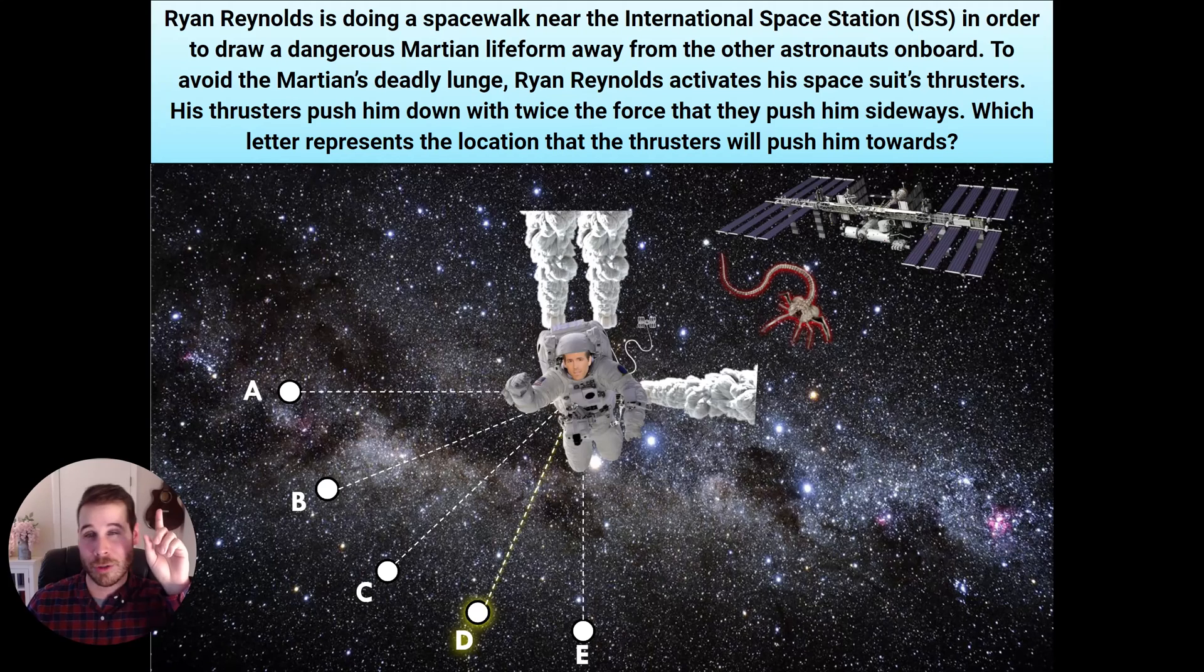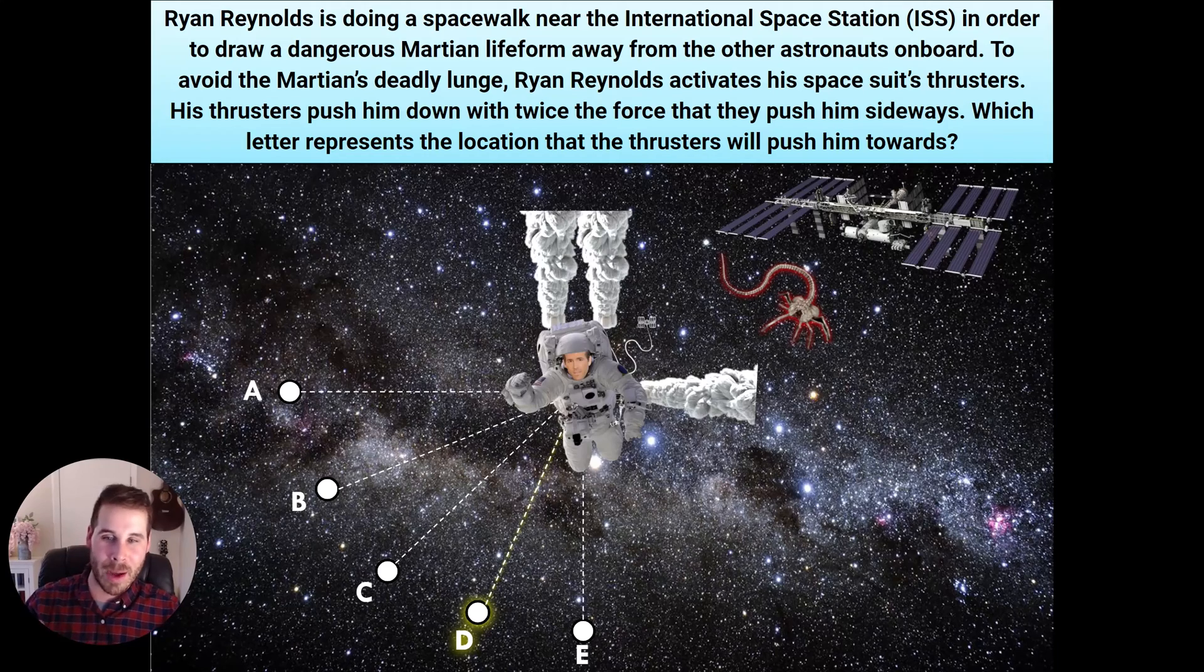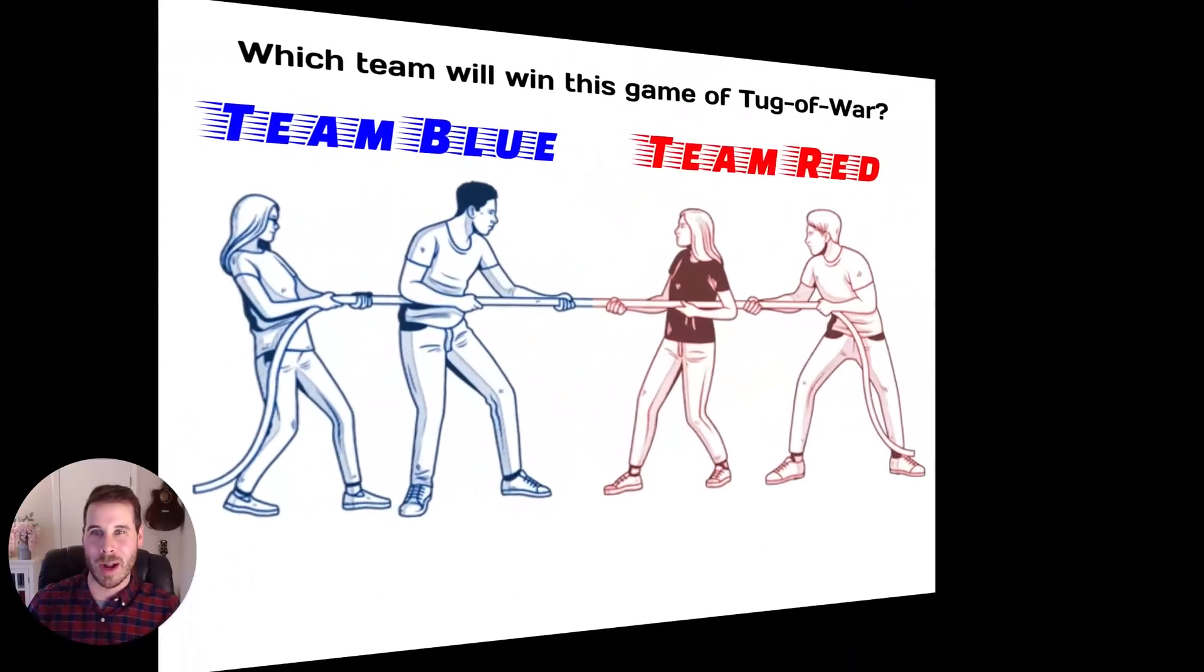So since the jets pushing up are stronger than the jet pushing to the right, there's going to be more downward motion than there will be leftward motion. And so option C would not be correct. Option D is the correct answer there. So there's your conceptual problem.